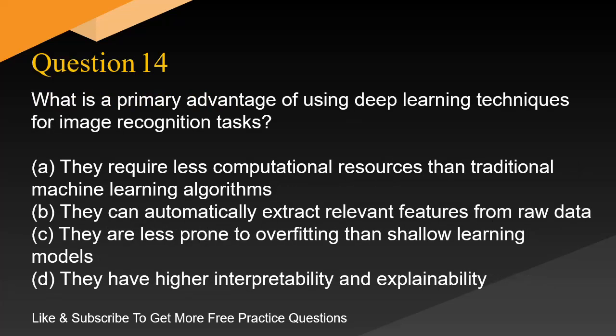Question 14. What is a primary advantage of using deep learning techniques for image recognition tasks? A. They require less computational resources than traditional machine learning algorithms. B. They can automatically extract relevant features from raw data. C. They are less prone to overfitting than shallow learning models. D. They have higher interpretability and explainability.